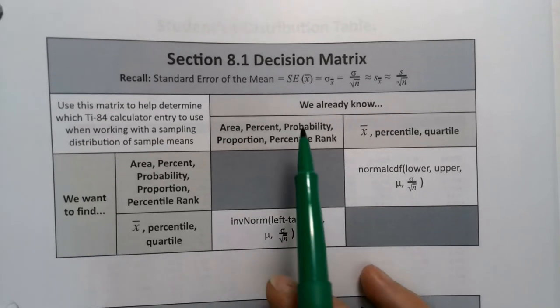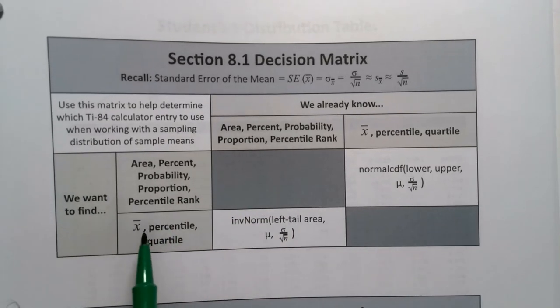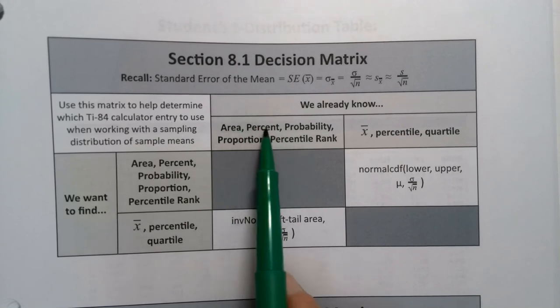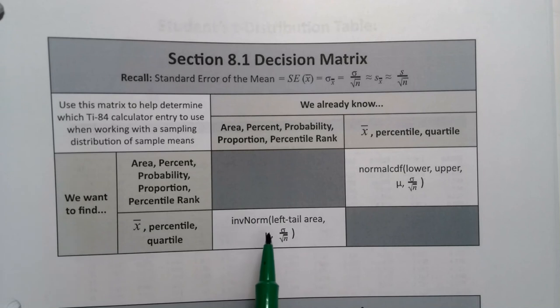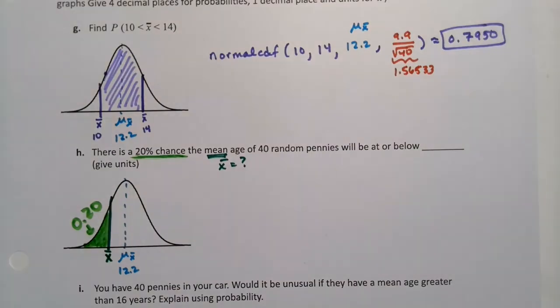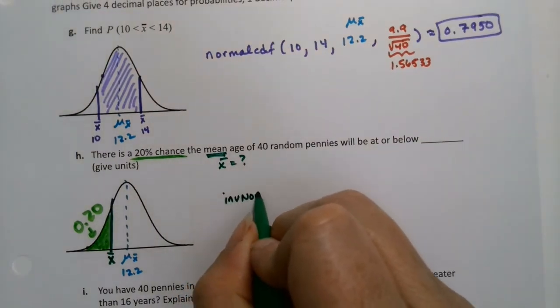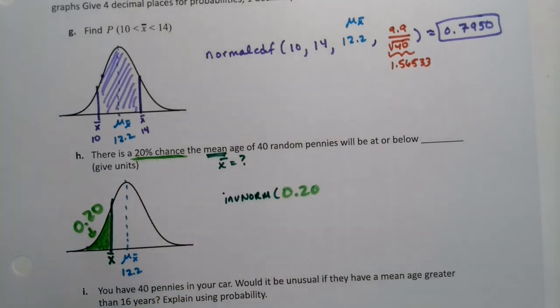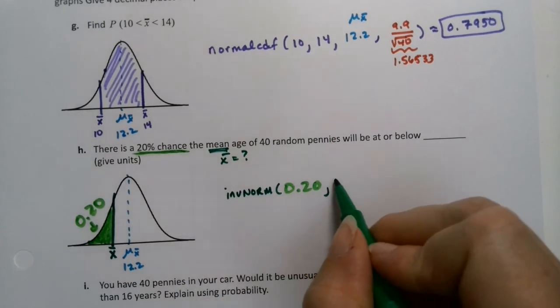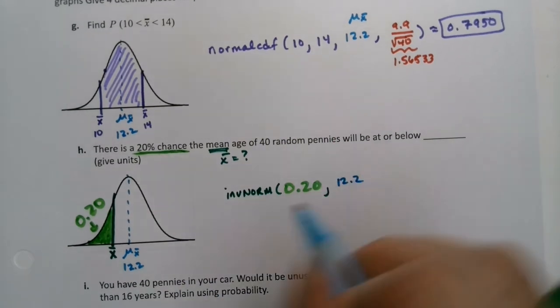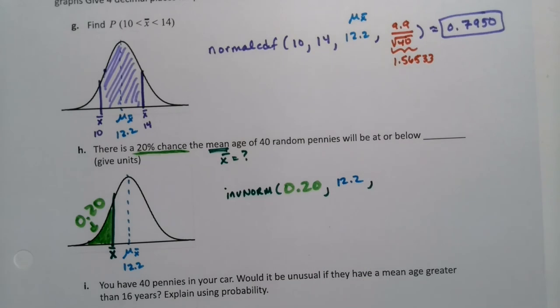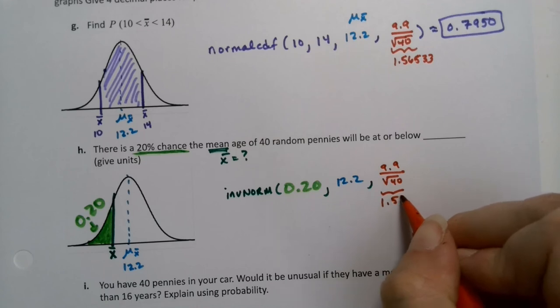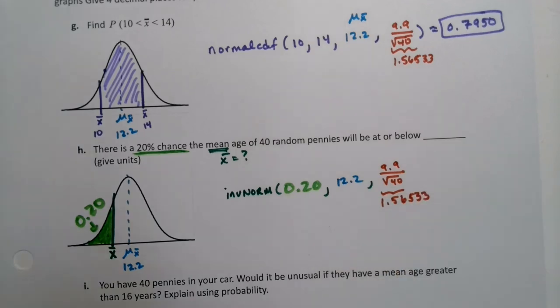Okay, so let's think about this. Let's go back to the matrix. Unfortunately not the one with Keanu Reeves. So I want to find an x bar. I know a percent, right? That's another big clue. I already know the percent is 20%. So it's going to have to be inverse norm. So inverse norm. I want the left tail area, which is that 0.20 business. And then the mean, which is 12.2. That hasn't changed. And then the standard error, which again you can either use 9.9 over the square root 40 or you can use 1.56533, whichever one makes you happy.